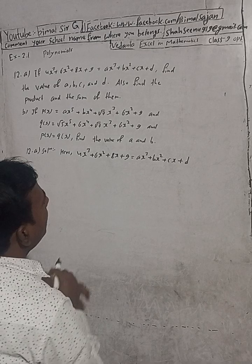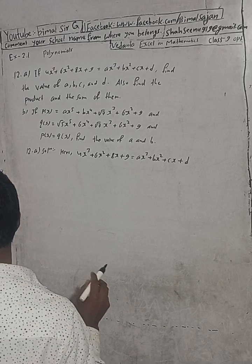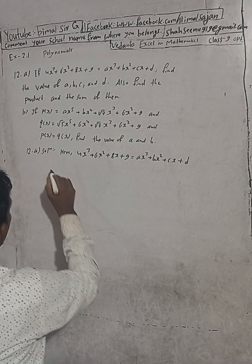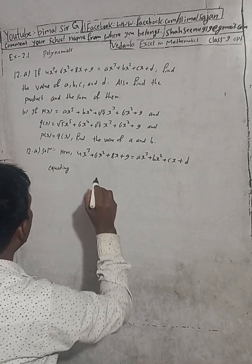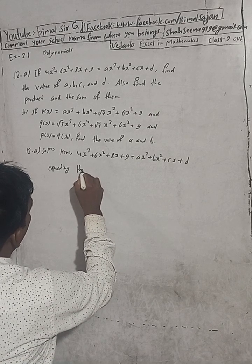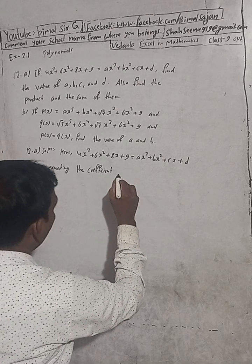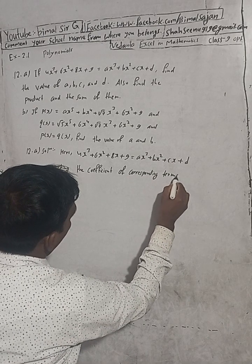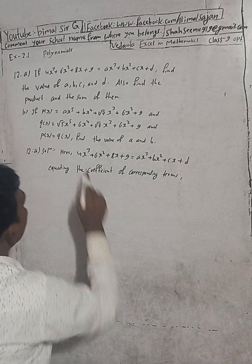To find the value of a, b, c, and d, we have to equate the coefficients. Equating the coefficients of corresponding terms, we get the following values.